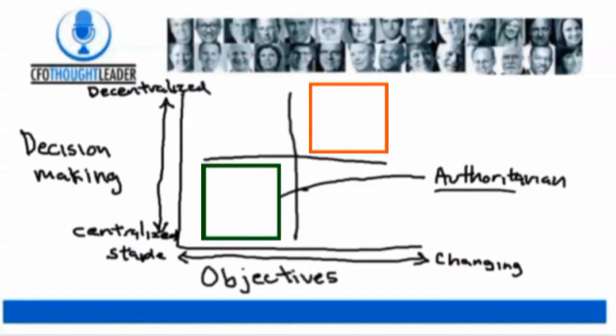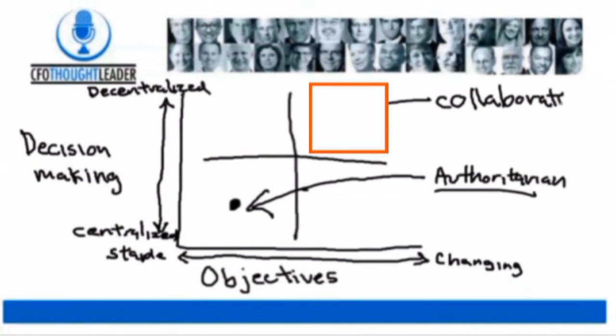And it's inside the red quadrant where there's quickly changing objectives and decentralized decision-making. And this calls for not only new tools such as rolling forecasts, but entirely new ways to manage people. And we call this the collaborative age of finance.